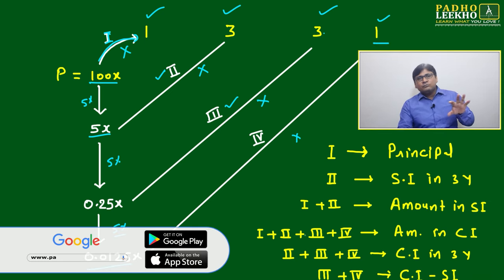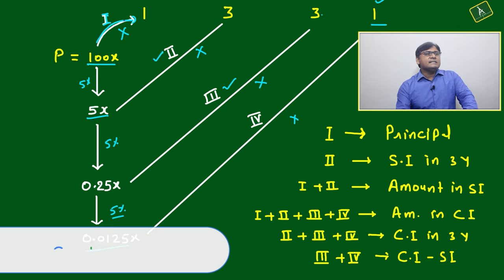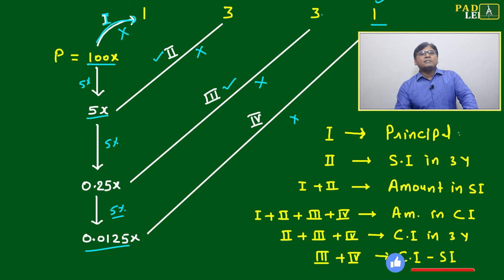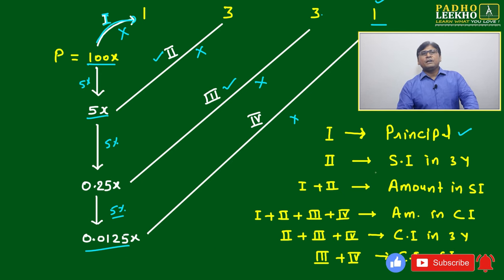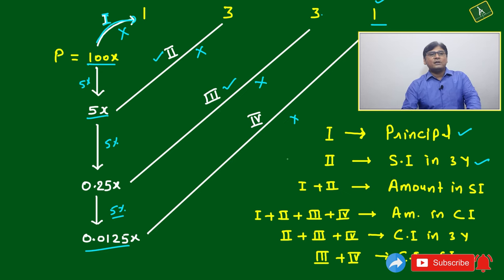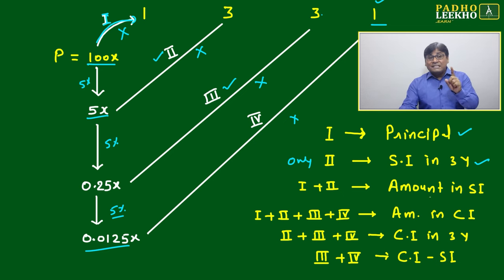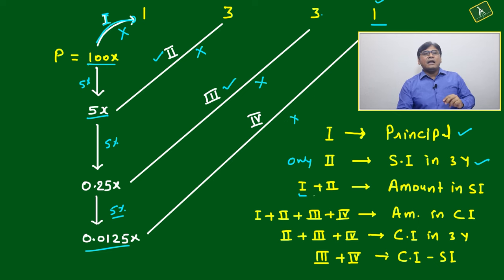Now let's understand what these lines mean mathematically in terms of CI and SI. Line 1, which is P × 1, will always give the principal. Line 2 will give the simple interest for 3 years — only Line 2, not including the principal, gives only simple interest in 3 years.